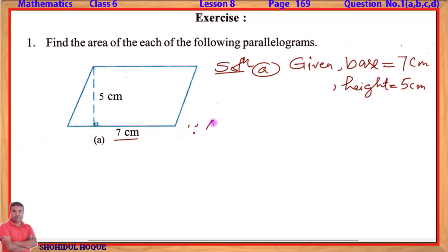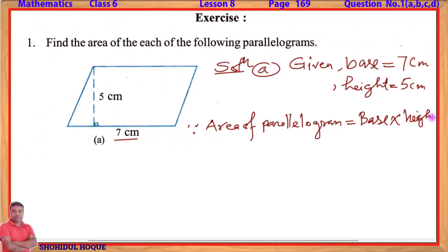We should remember the formula: the area of a parallelogram equals base into height. So, area = base × height = 7 × 5. The units are centimeter × centimeter, which gives us square centimeters.